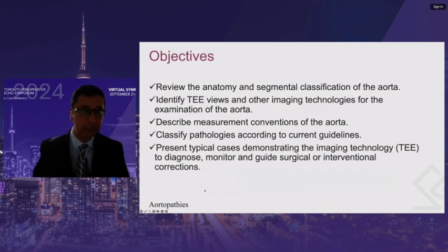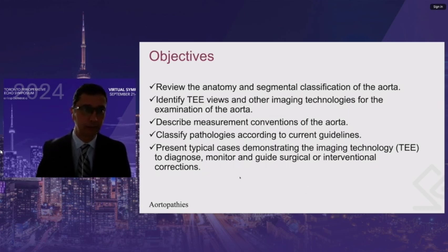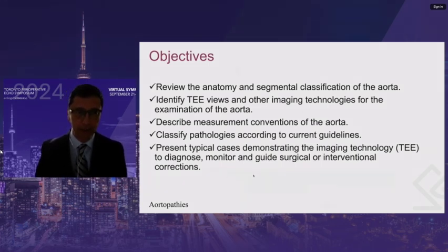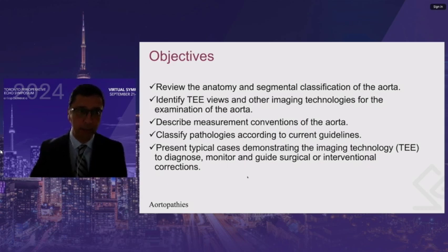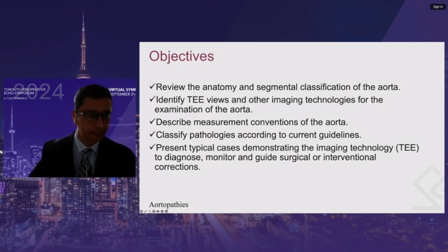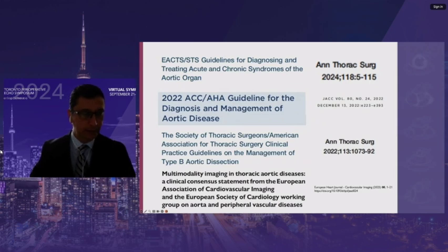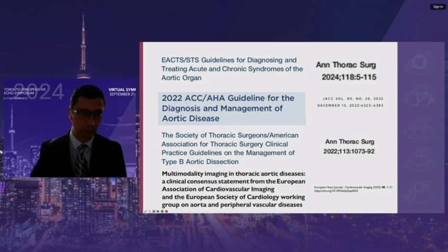Our objectives are to review the anatomy and segmental classification of the aorta, identify TEE views and other imaging technologies for the examination of the aorta, describe measurements and conventions for the aorta, classify pathologies according to current guidelines, and present typical cases demonstrating imaging technology — particularly TEE — to diagnose, monitor, and guide surgical or interventional correction. This is an important topic, as international guidelines published in the last two years provide updated consensus recommendations for the management of aortic diseases, with a focus on aspects pertinent to perioperative echocardiography.